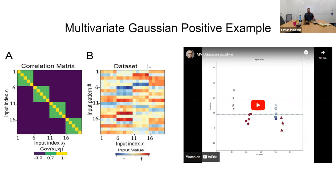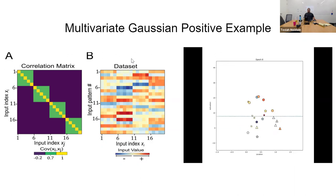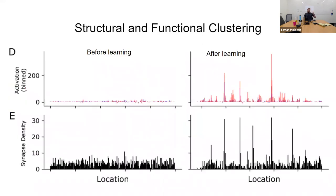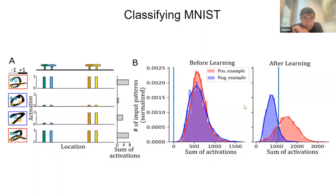Now we try it on MNIST. The idea is that you're learning correlations within the correlational structure of each digit. Before learning and after learning, you get a nice separation of the distributions of the positive and negative patterns — this might be the number two in a one-versus-rest paradigm with about a thousand twos and a thousand of everything else — corresponding to roughly 80-90% accuracy on the one-versus-rest task. This was done with a single neuron.